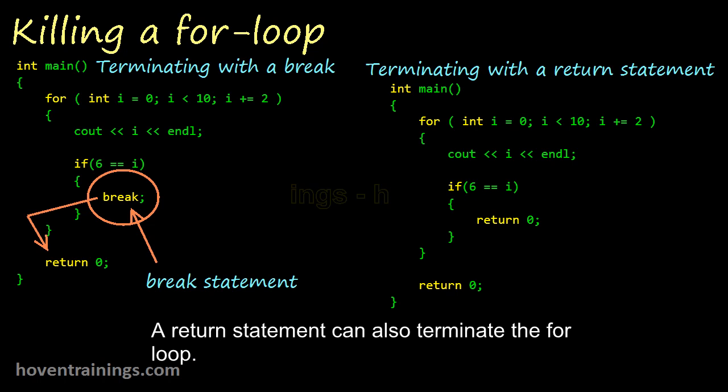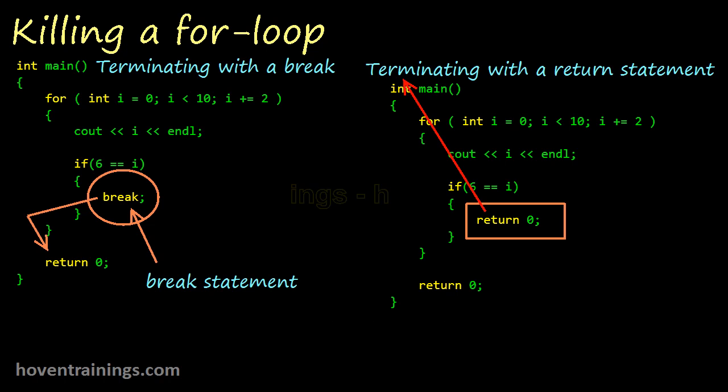A return statement can also terminate the for loop. Actually, the return statement is the ultimate exit statement. It causes the function itself to exit. This return causes the function to exit. Consequently, the loop too exits.